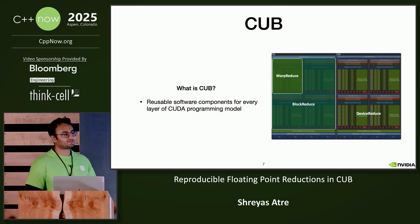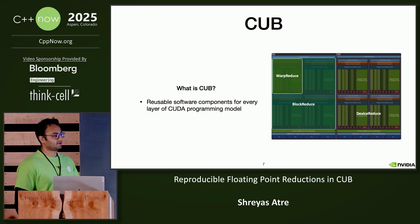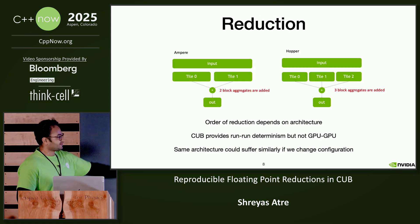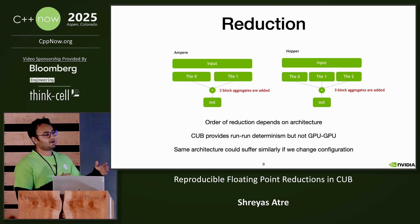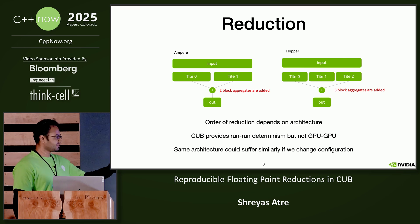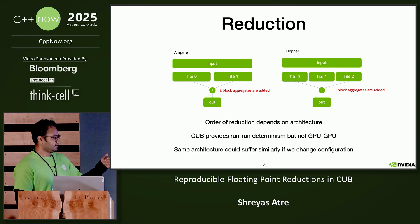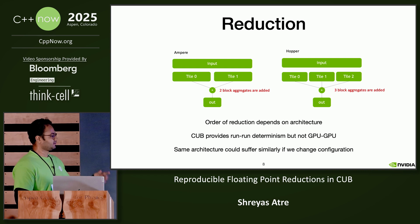So what's CUB? CUB is CUDA Unbound. It's a library which provides several primitives to program GPUs and it claims to provide out-of-the-box speed-of-light performance. Reduction today works like this: on Ampere you'll have different tile configurations, on Hopper you'll have different tile configurations. And as we saw before, the order matters when you use floating point summation reductions, so the results are going to be different in both cases. But CUB does provide run-to-run determinism, which means if you run on the same GPU with the same configuration, the result is going to be the same.